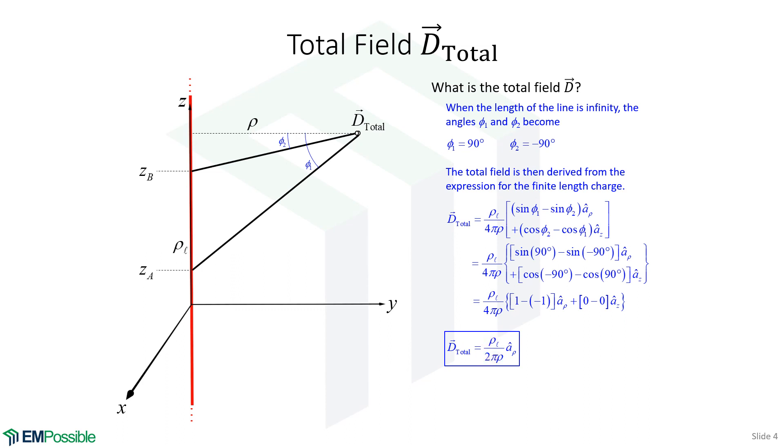Notice it's similar up here, but we had a 4 pi rho, and it's really because we had this stuff in here that would essentially give us the 2, or a 2 in the numerator that would cancel with that to give us a 2 in the denominator. So this is the electric flux around an infinite line charge, and it decays as 1 over rho.